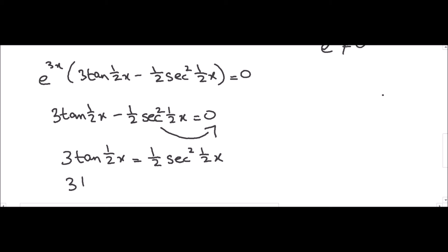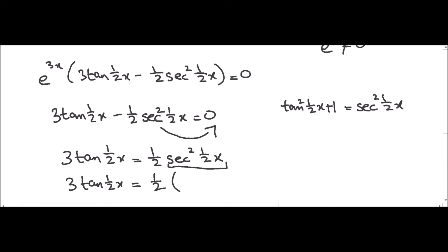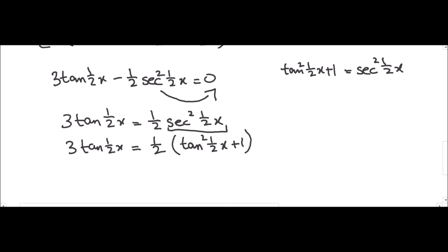We will now use the identity tan²(½x) + 1 in place of sec²(½x) — this identity is given in the formula sheet. Replacing sec²(½x) gives: 3·tan(½x) equals ½·(tan²(½x) + 1), which expands to 3·tan(½x) equals ½·tan²(½x) plus ½.